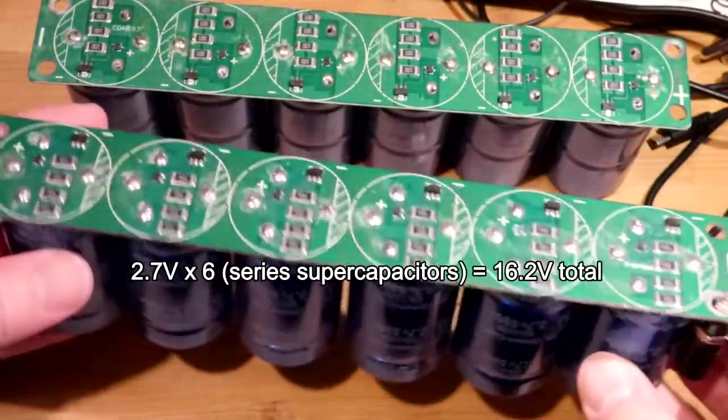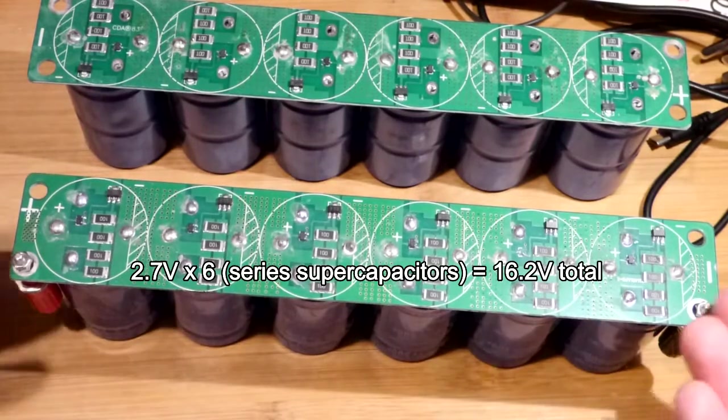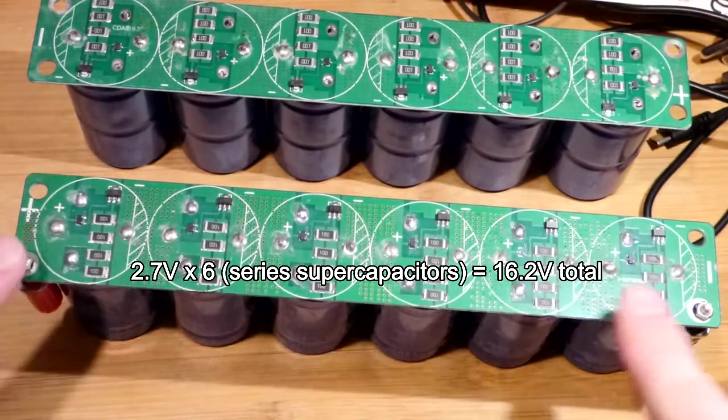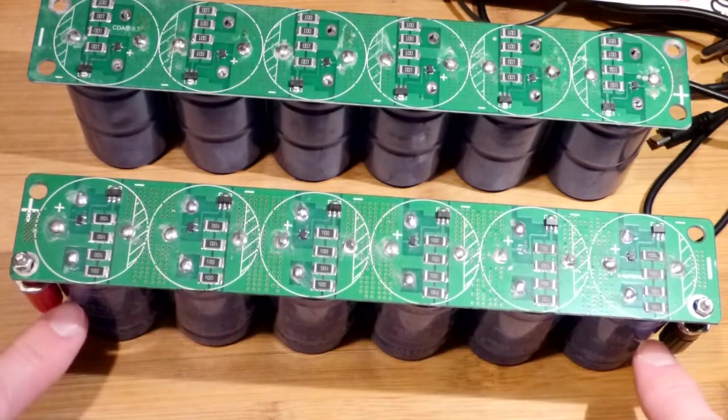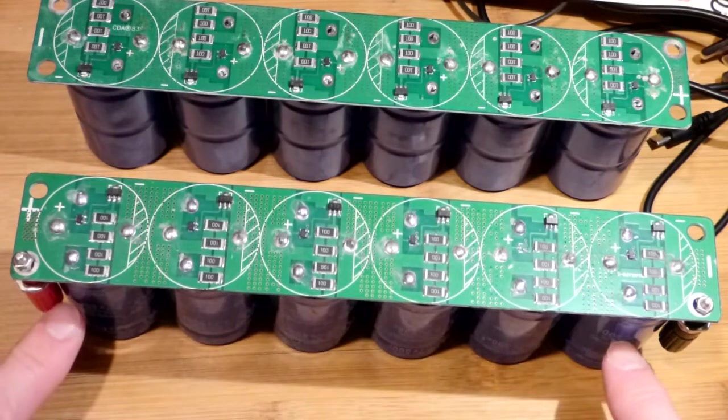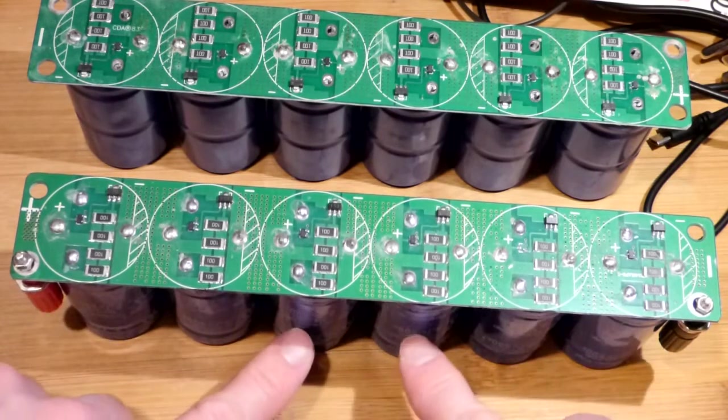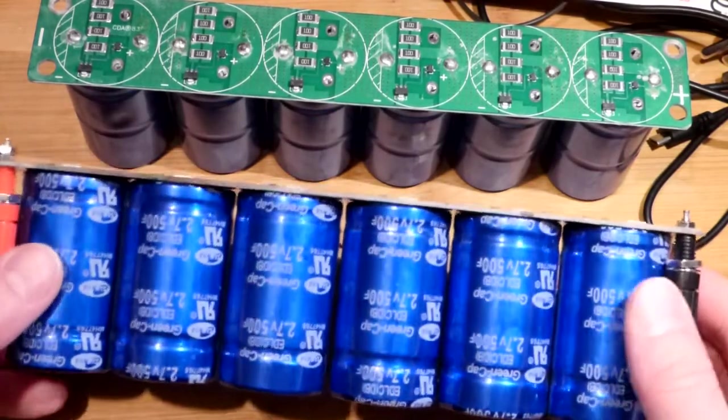When we charge them, each one will charge at 2.7 volts if we fully charge them, but we'll have 16.2 volts across all of them. It's the addition of all the voltage of the supercapacitors, or the multiplication if you want to look at it that way. Because they should be equally charged at all times, hopefully the board will help make that happen.